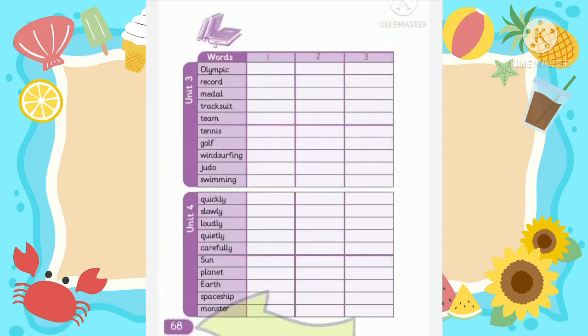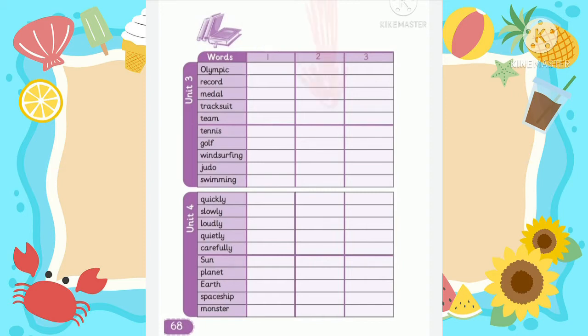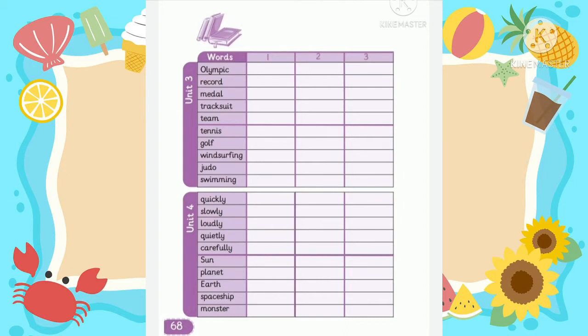Okay, grade 4, open page 68 of the skills book. Read the spelling words for Unit 3: Olympic record, medal, tracksuit, team. Write them in the first column on the first day. Then, on the second day, cover the words and write them in the second column.